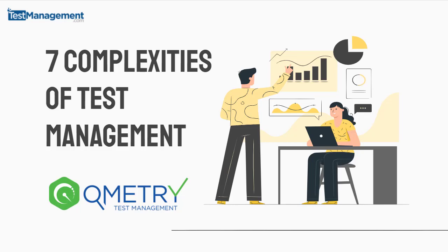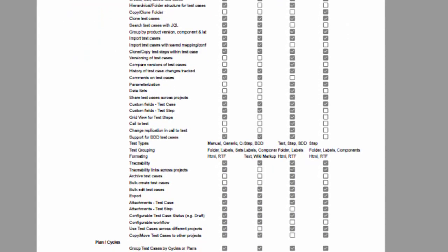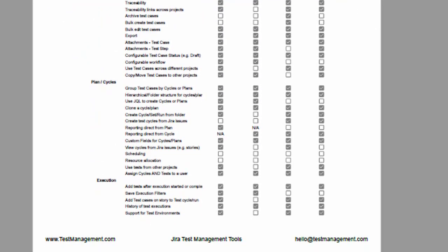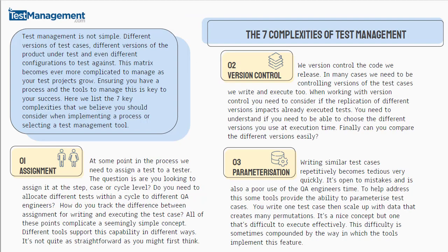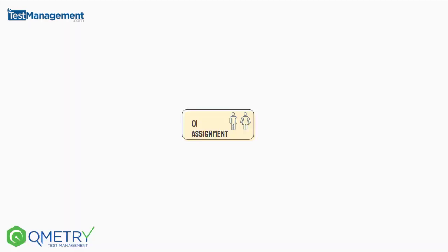There are a lot of aspects to a test management solution — lots of knobs, levers and switches to push and pull. Our side-by-side feature comparison identified just over 100 of them. Obviously not all are important, but some will be more important to certain teams than others. However, there are seven complex features that every test management solution has to address in some way, and in this mini webinar I'm going to walk you through how Qmetry stands up to each of these seven criteria.